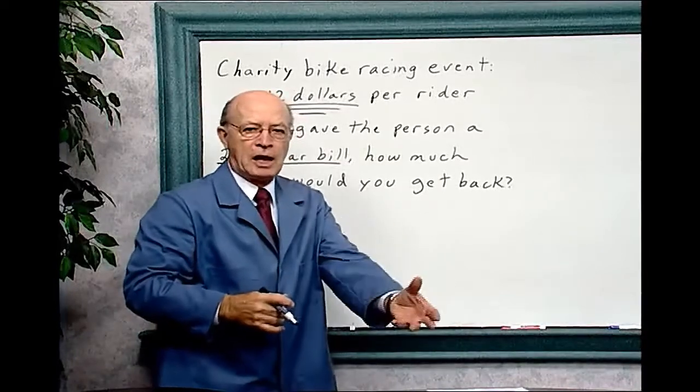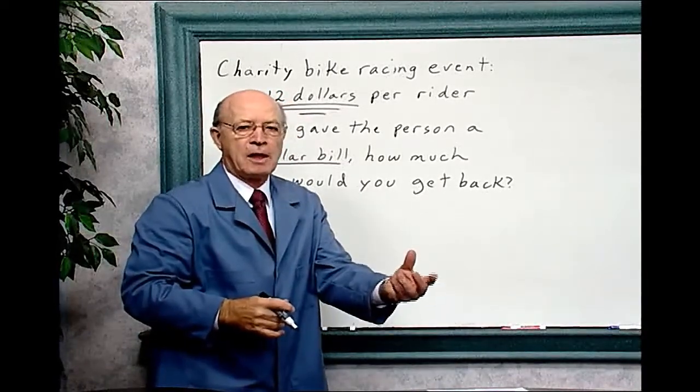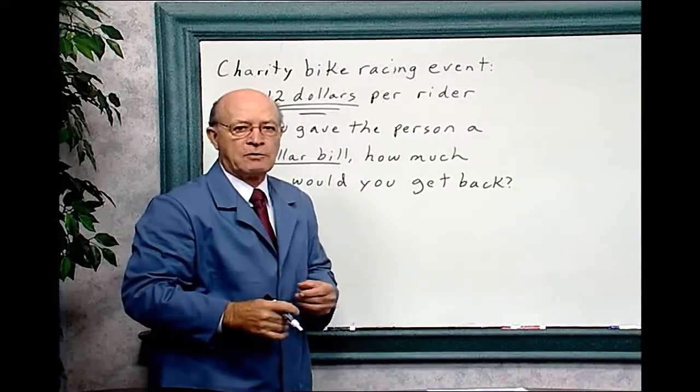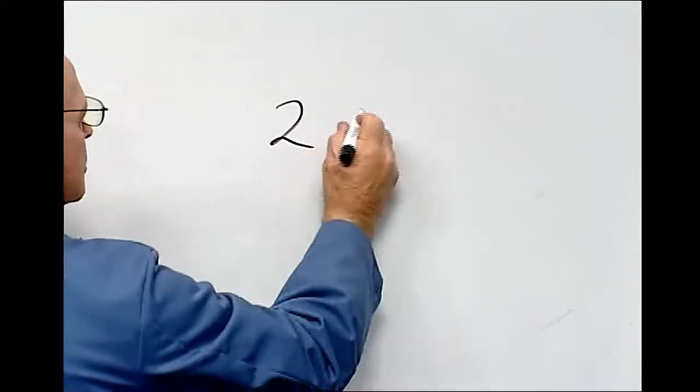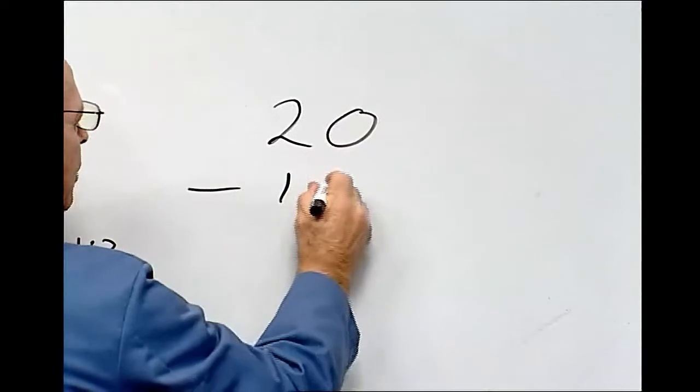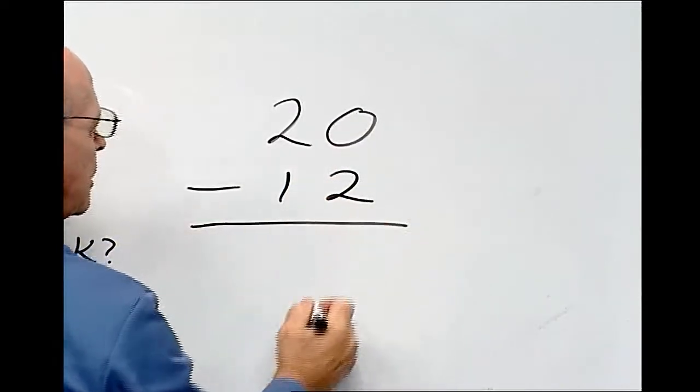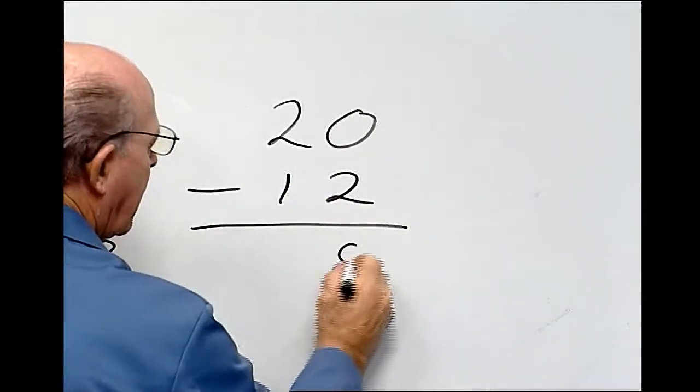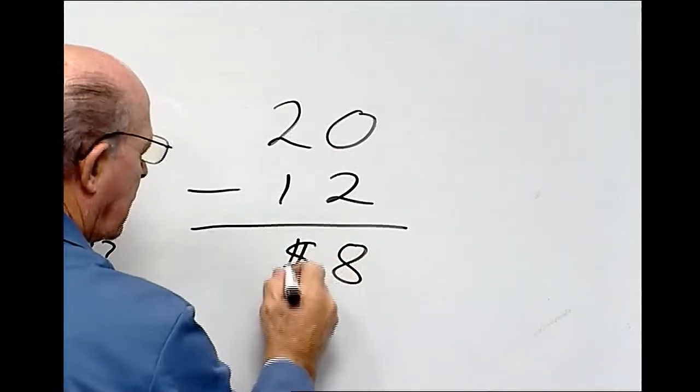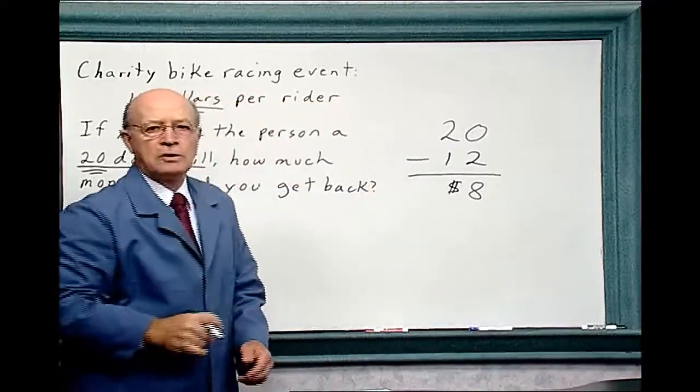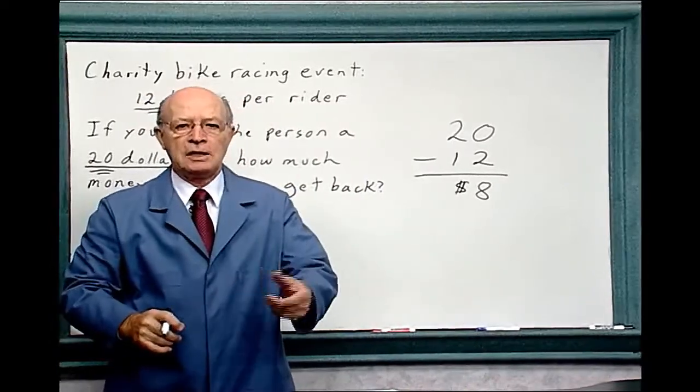So you give this person twenty dollars, and it costs twelve dollars, how much money does the person give you back? So that's the subtraction problem. So twenty dollars minus twelve equals eight. You can write out the word dollars or use the dollar sign. This is the dollar sign. So the person will give that person eight dollars back.